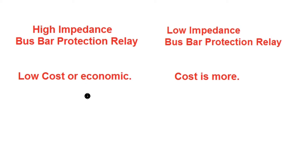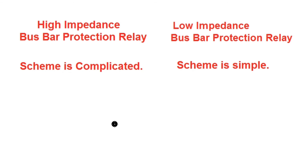In case of high impedance bus bar protection relay, although the scheme is complicated, it is low cost or economical in budget. In case of low impedance bus bar protection relay, the budget is more, or it is more cost-intensive. The high impedance scheme is complicated due to the requirement of stabilizing resistance calculation, metroseal, and CT switching relay — all of which make the scheme somewhat complicated.